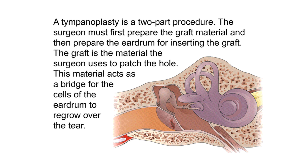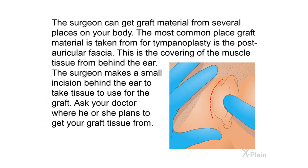Tympanoplasty is a two-part procedure. The surgeon must first prepare the graft material and then prepare the eardrum for inserting the graft. The graft is the material used to patch the hole — it acts as a bridge for the cells of the eardrum to regrow over the tear. The most common place graft material is taken from for tympanoplasty is the post-auricular fascia, the covering of the muscle tissue from behind the ear. The surgeon makes a small incision behind the ear to take tissue for the graft.